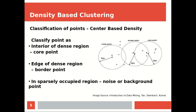When you compute the density within a radius, if the density is similar, you can cluster those points together. The interior of a dense region, when computed based on EPS, is known as a core point. The edge of the dense region is known as a border point. The sparsely occupied region contains noise or background points.